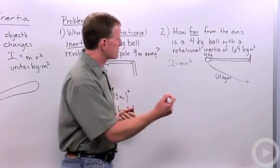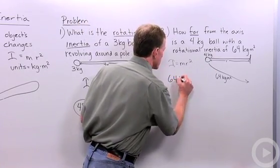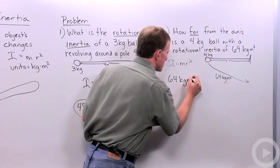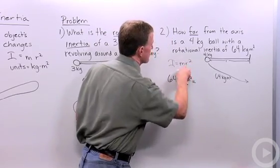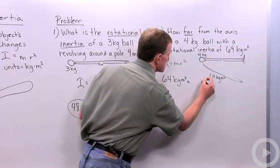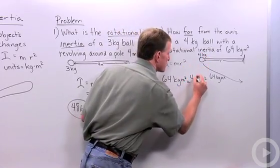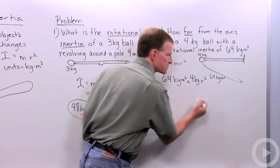So let's put those values in. We've got 64 equals... I don't know what r is, but I do know what my mass is. My mass is 4 kilograms.